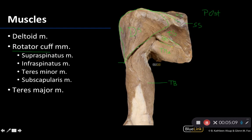The teres minor is always superior to the teres major. To review: this is the infraspinatus; the teres minor is the smallest of these muscles and still a rotator cuff muscle. Then we have the larger teres major, which is NOT a rotator cuff muscle, attaching at the inferior angle of the scapula and inserting on the crest of the lesser tubercle — palpable in the posterior axillary region.